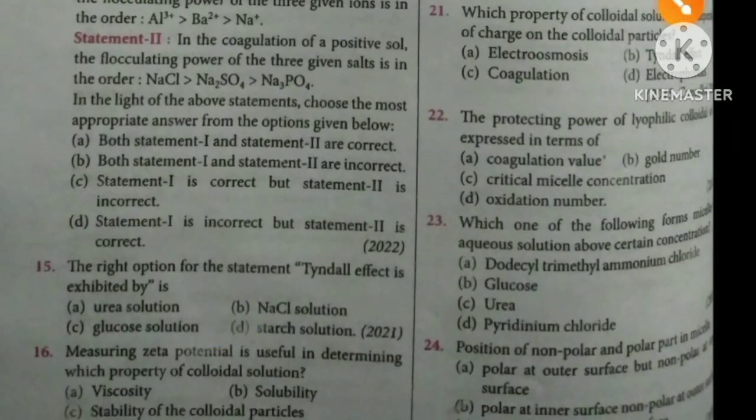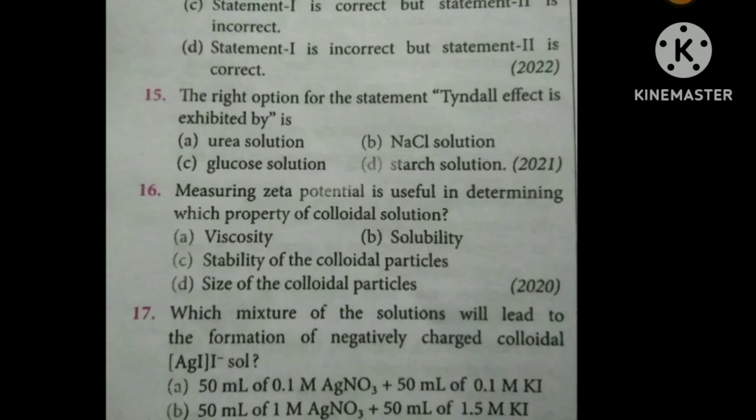Measuring the heat of coagulation is used for determining which property of colloidal solution? The options are color, viscosity, solubility, stability, and size of colloidal particles. The correct option is C — size of colloidal particles.